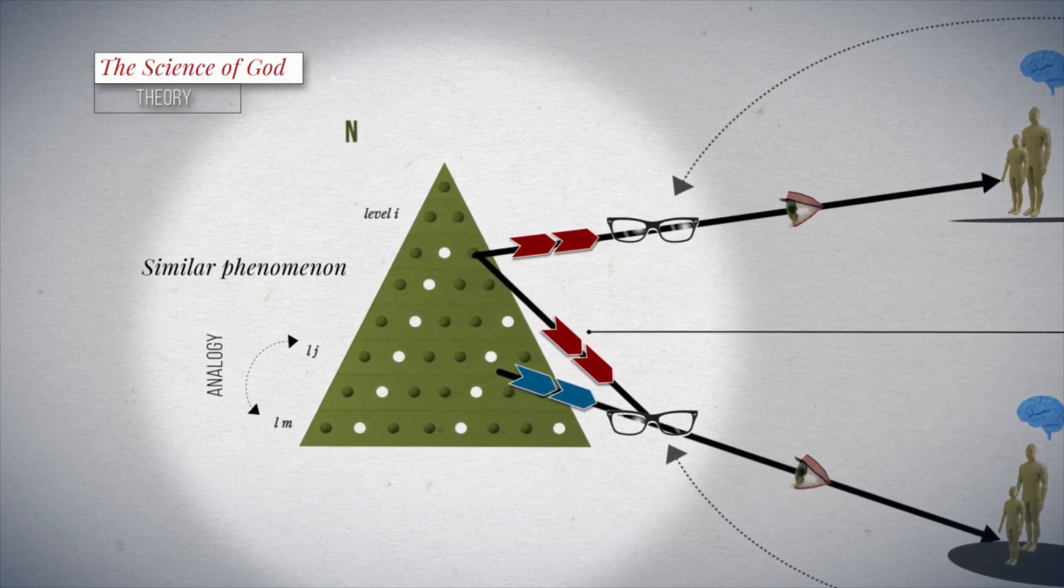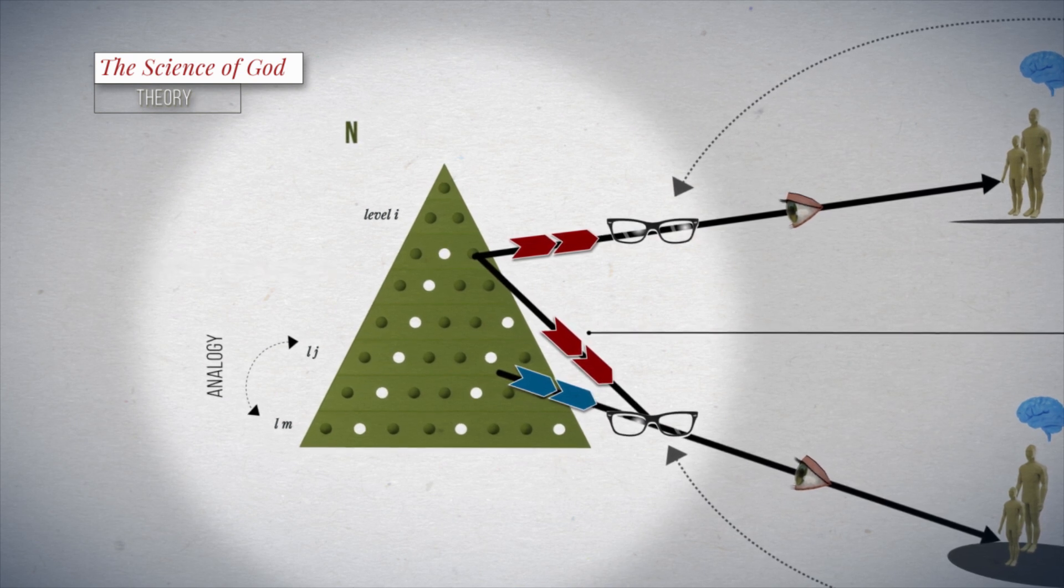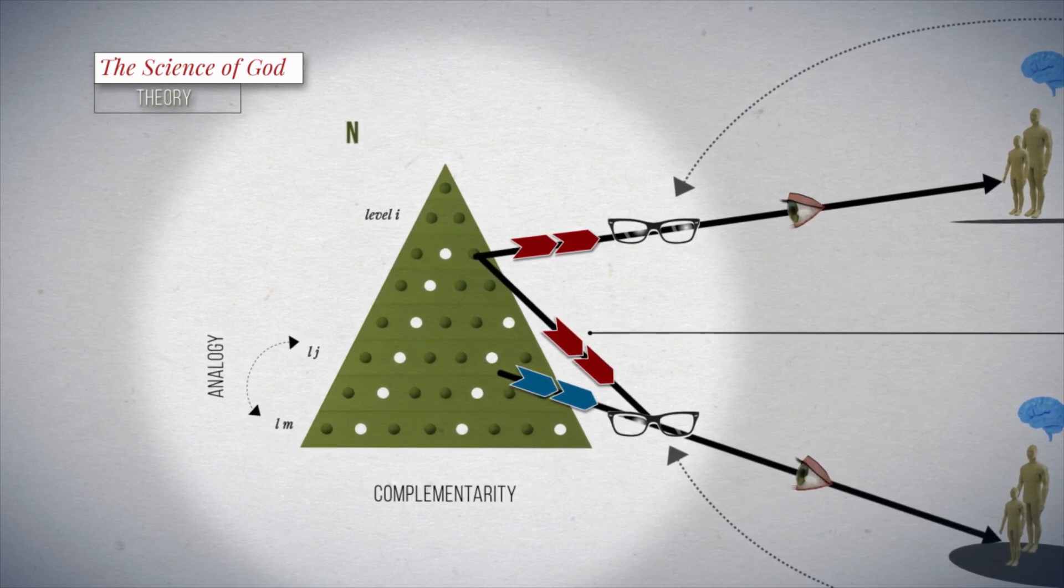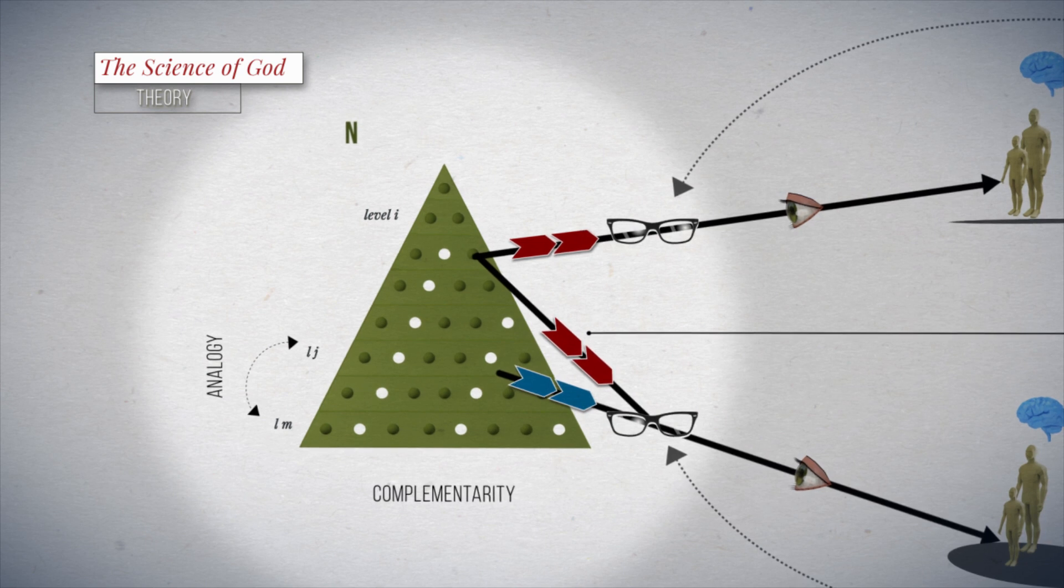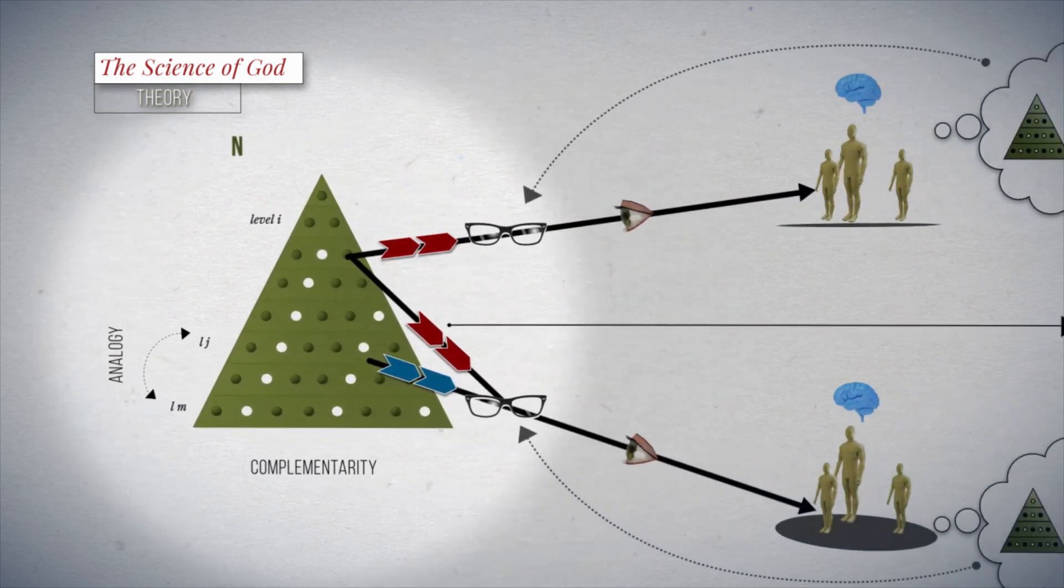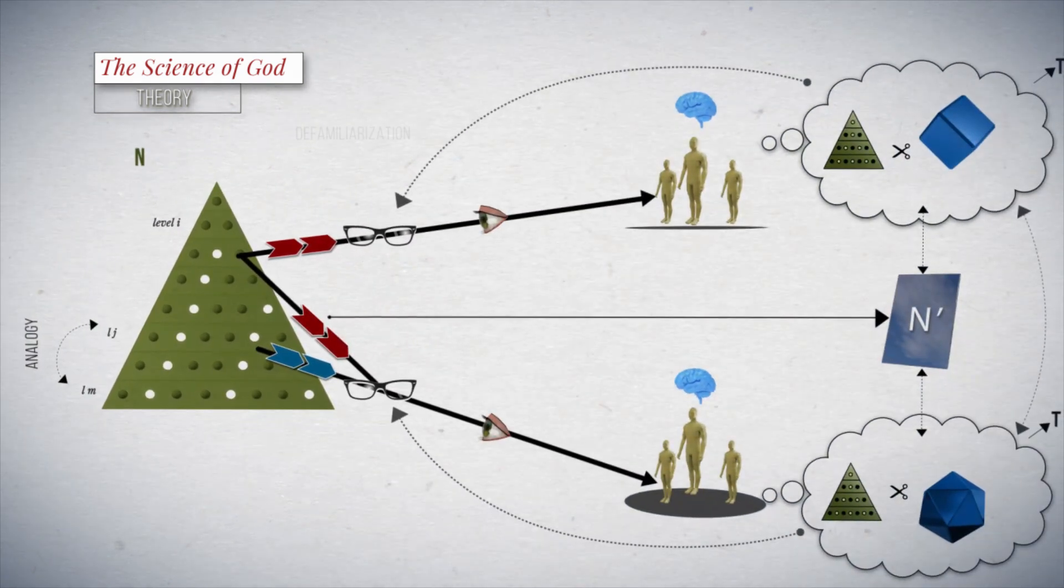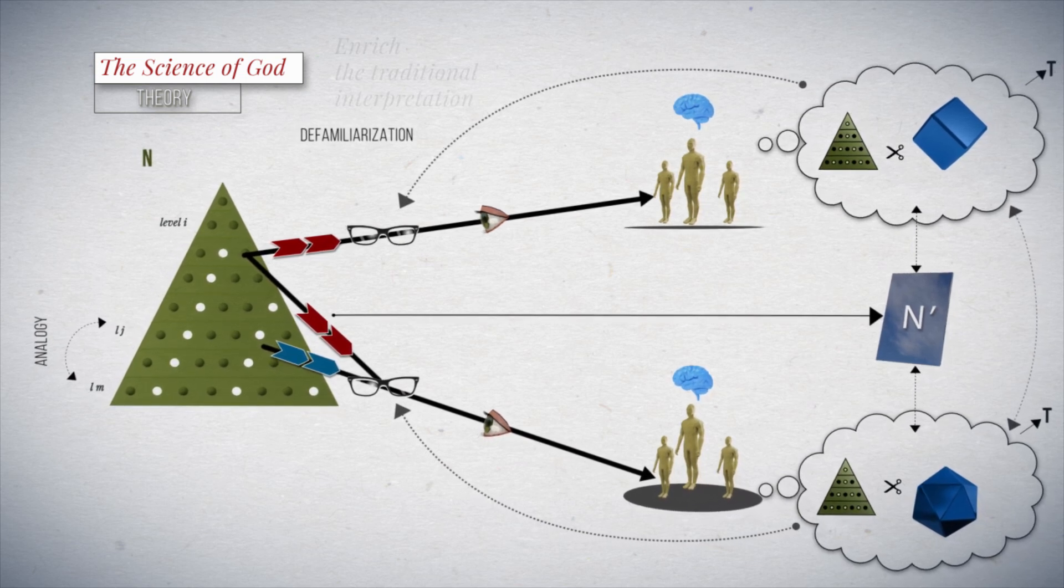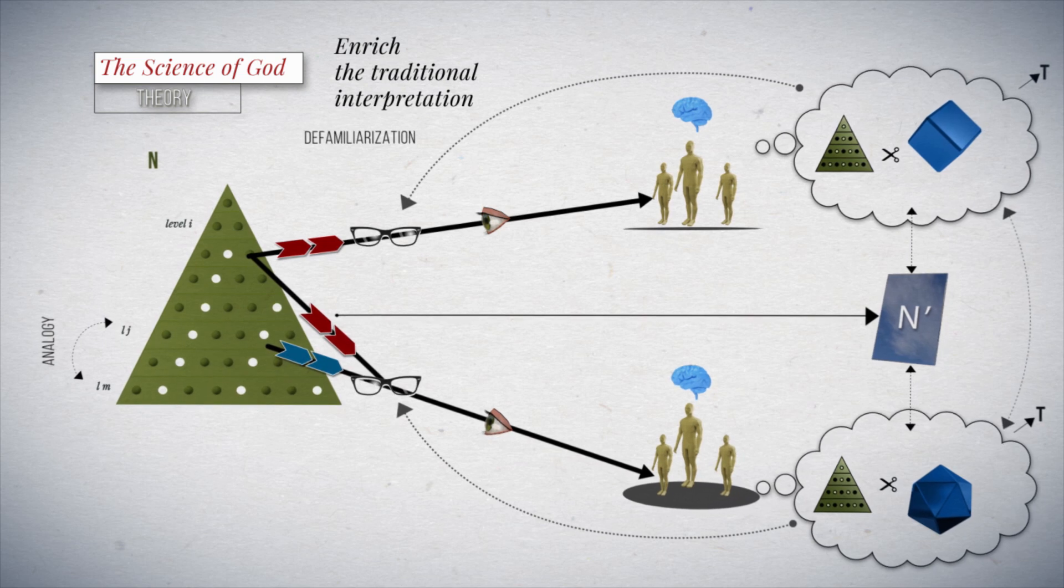Historically, the representation of complex phenomena often required complementarity between two or more apparently contradictory models. This unexpected form of modeling exemplifies the defamiliarization that should be sought by a theorizing process that intends to enrich the traditional interpretation in its encounter with reality.